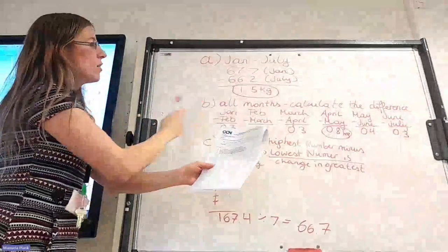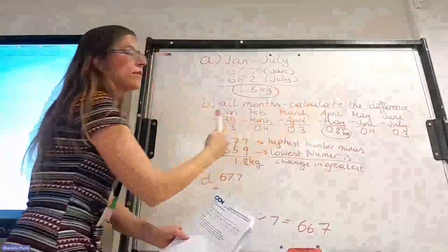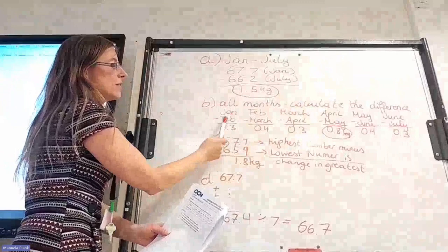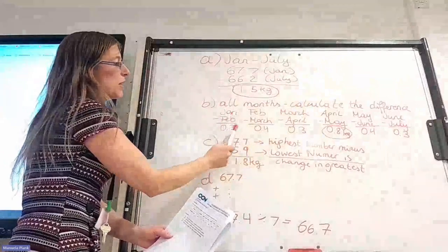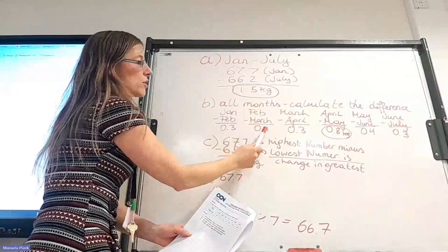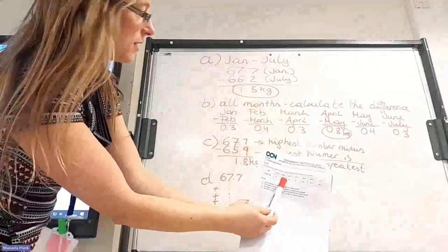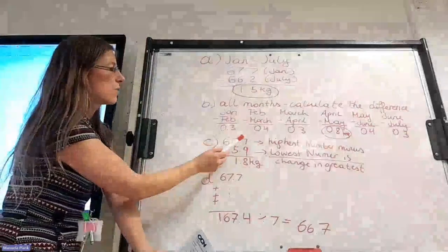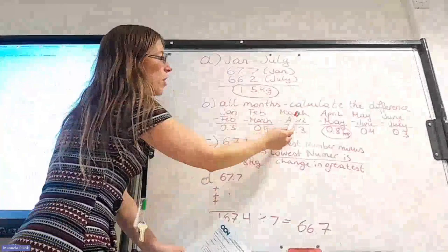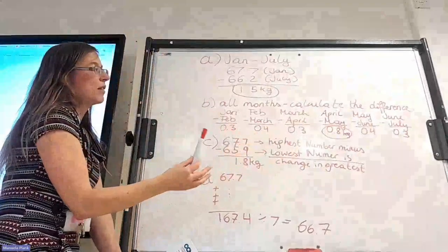In B, we calculate all of the months. So the difference of all of these months. So we start with January minus February, which is 0.3. We calculate February minus March, which is 0.4. So we calculate this number minus this number, gives us that outcome. Then February minus March, this one. March minus April. Try not to forget one month.